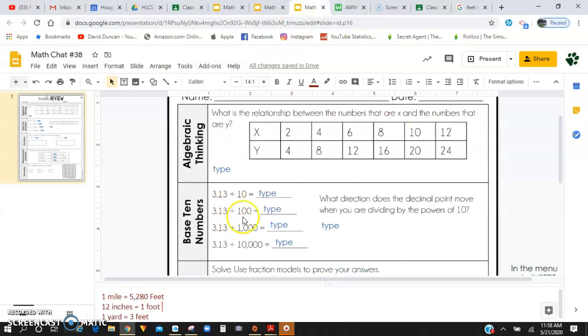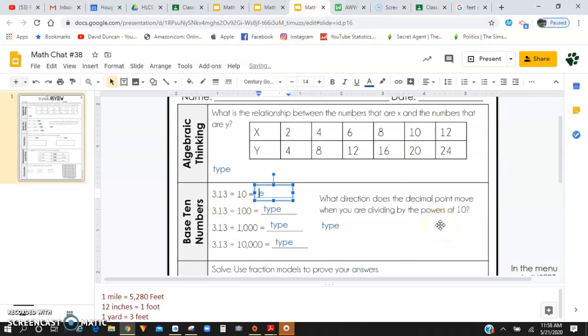Okay, I'm going to type that answer in right here for you guys, 0.313. You're going to continue that pattern. And I did already give you an answer right here on what direction the decimal moves when dividing. I'll have you guys type that out, though.